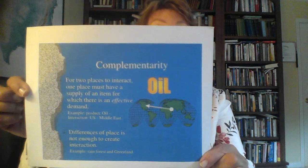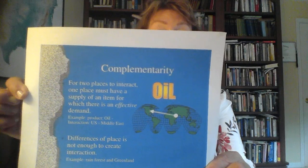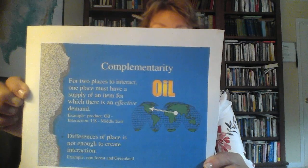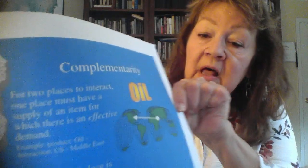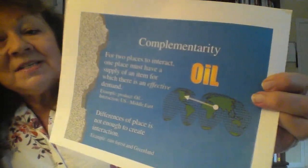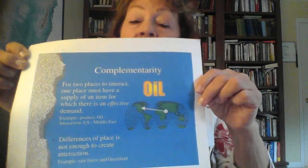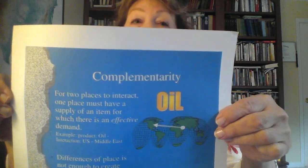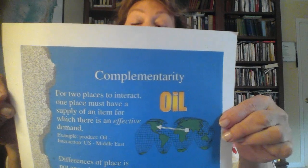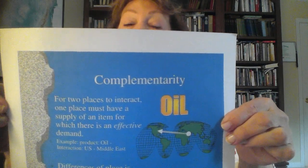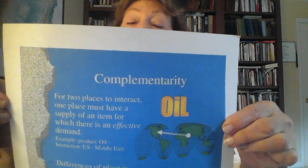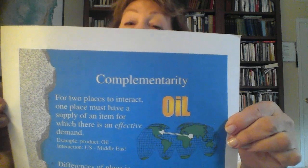Complementarity is a deficit of a good or product in one place and a surplus of that same product in another place. So for two places to interact, one place must have a supply of an item for which there is demand elsewhere. An example used here — it's a bit of an old example — would be the Middle East and oil. The United States requires a lot of oil, and it used to be that the Middle East was the major supplier.